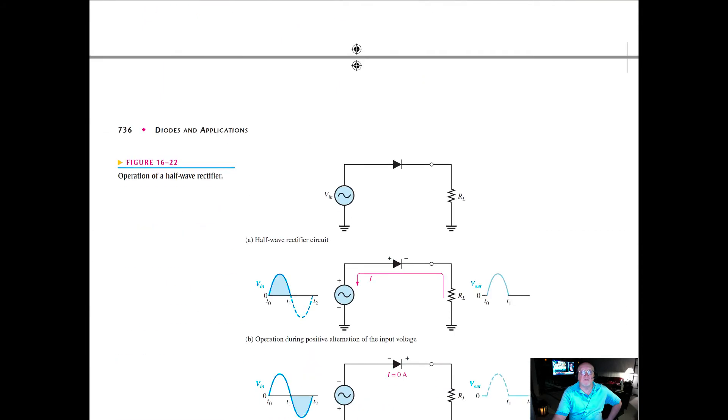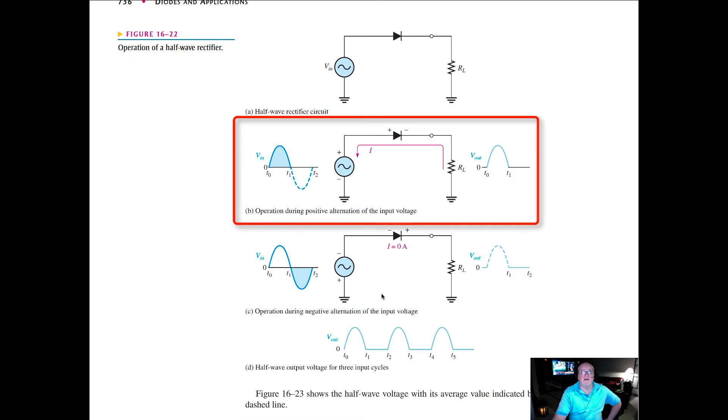If we scoot forward here, we've got operation during the positive alternation. So we've got that portion right there, just from zero to the peak and back to zero.